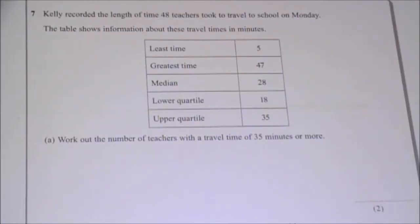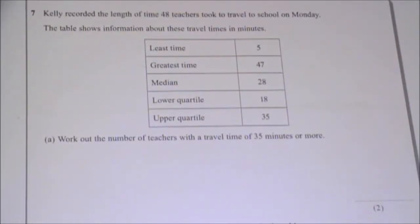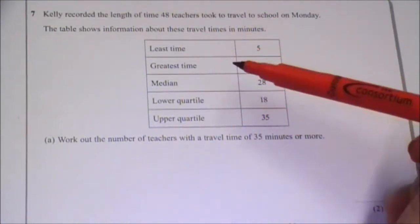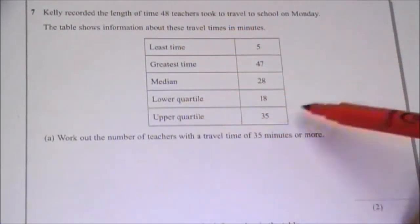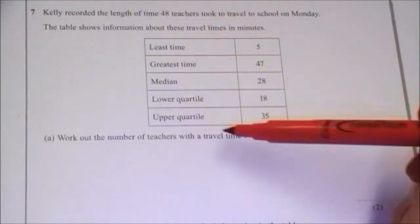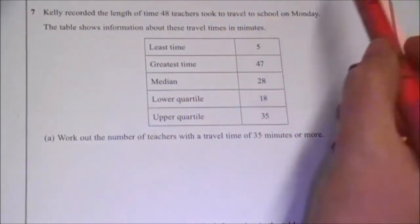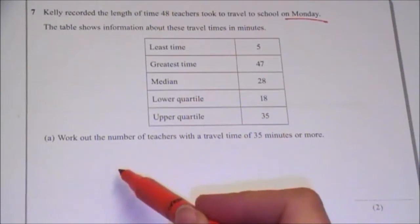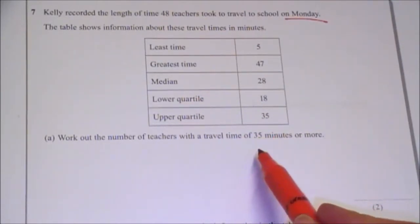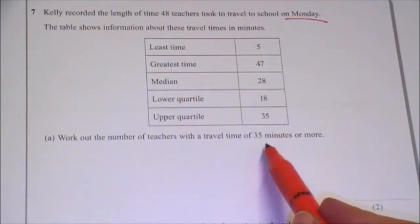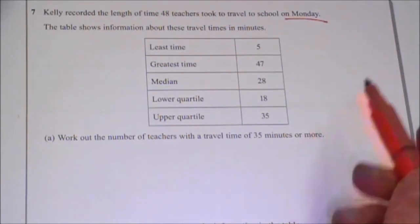Question 7 is a box plot question. Kelly recorded the length of time 48 teachers took to travel to school on Monday. The table shows information about these travel times in minutes — this is the information for Monday. Work out the number of teachers with a travel time of 35 minutes or more.